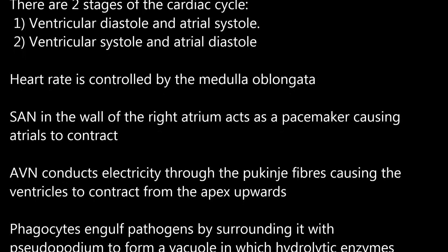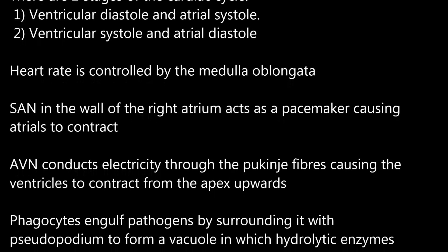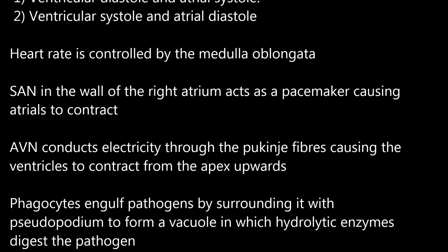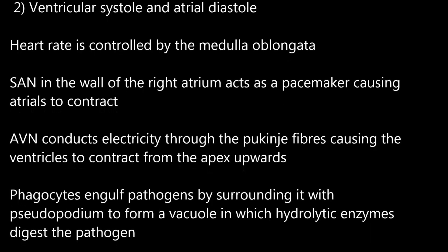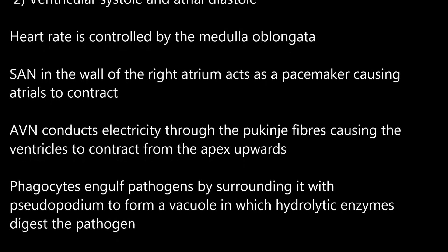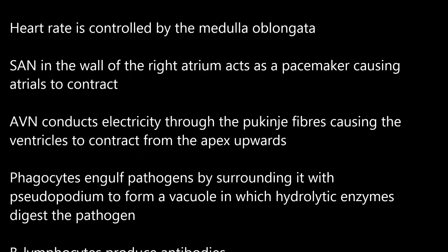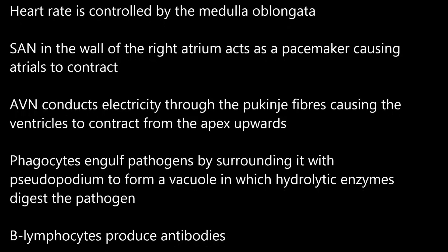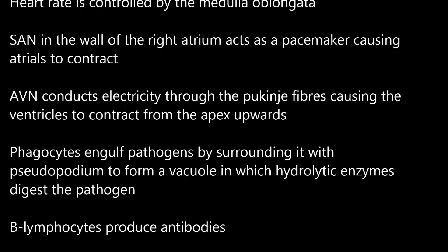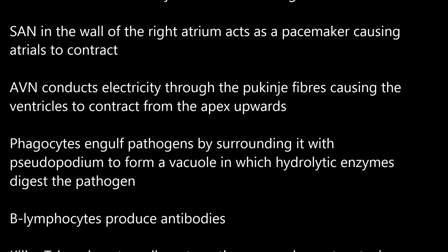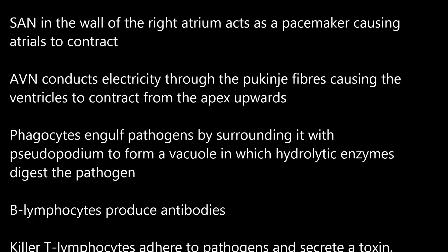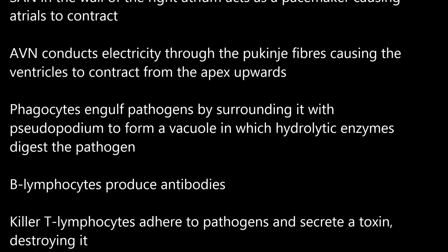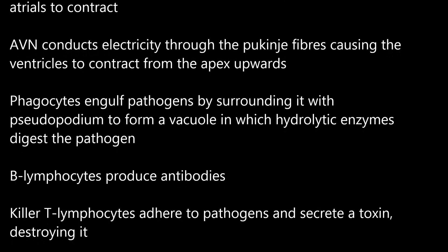Heart rate is controlled by the medulla oblongata. The sinoatrial node in the wall of the right atrium acts as a pacemaker, causing the atria to contract. The AVN conducts electricity through the Purkinje fibers, causing the ventricles to contract from the apex upwards.